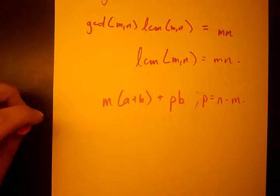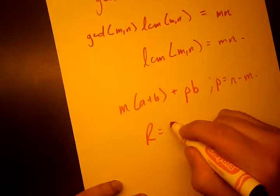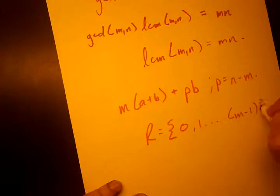So what do we know about this? We know that this has to give all the remainders. We're going to make a remainder set from 0 to M minus 1.